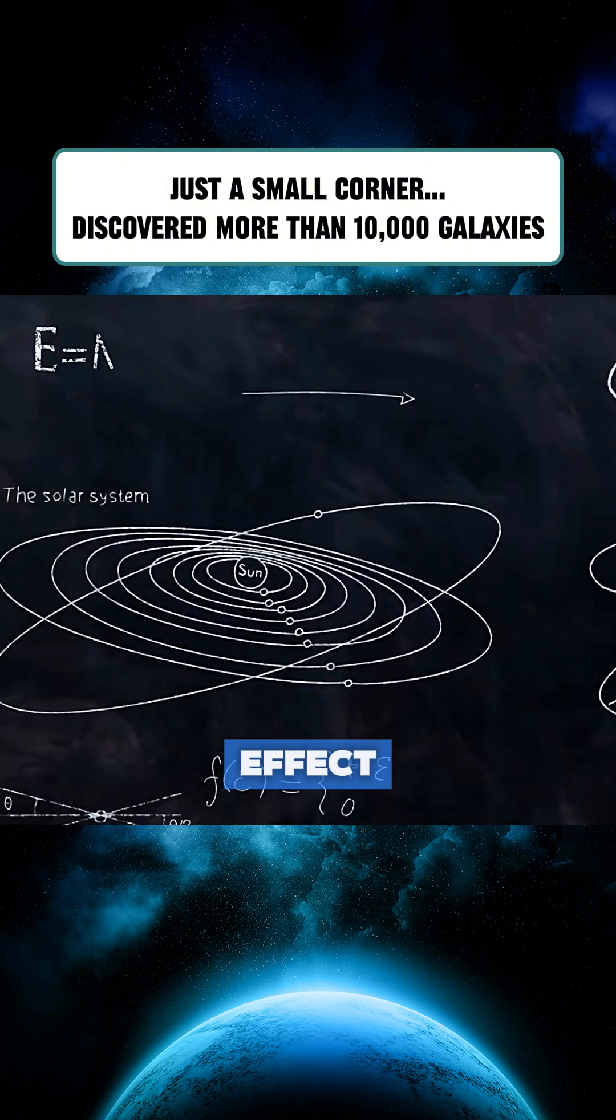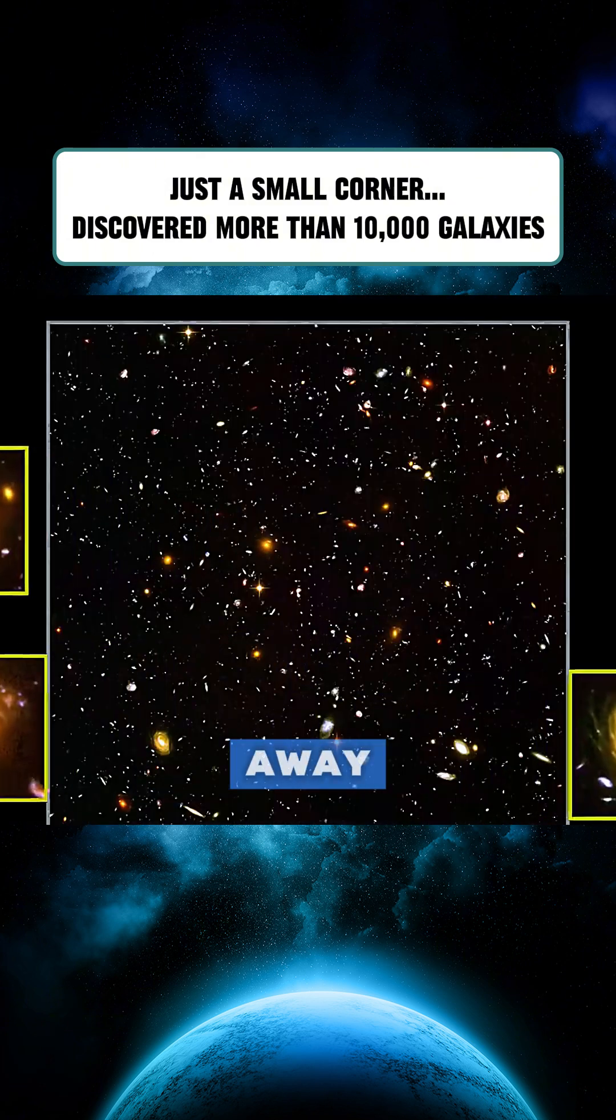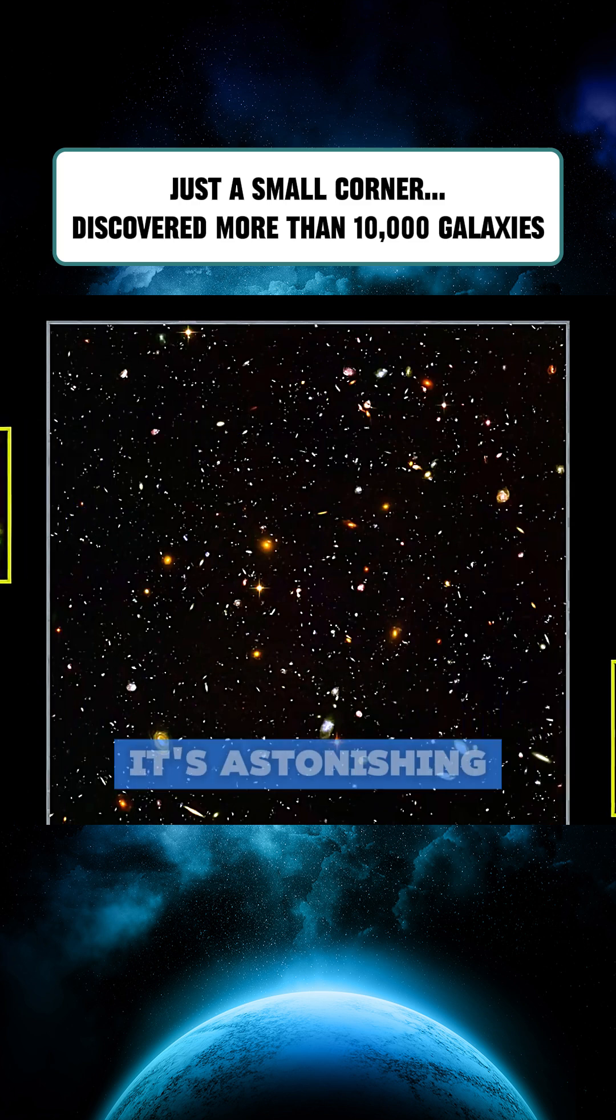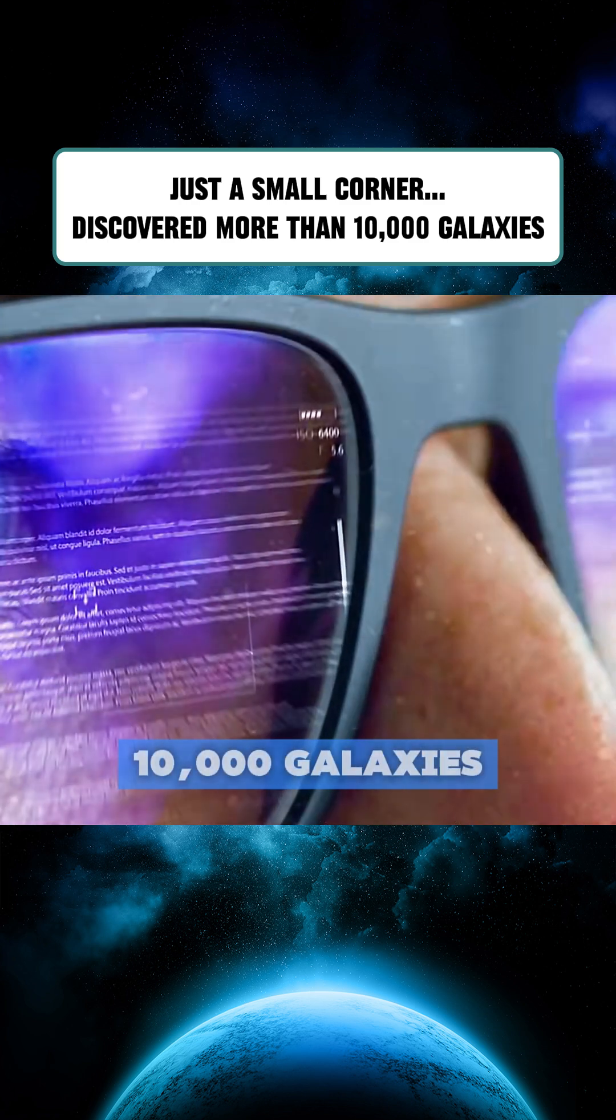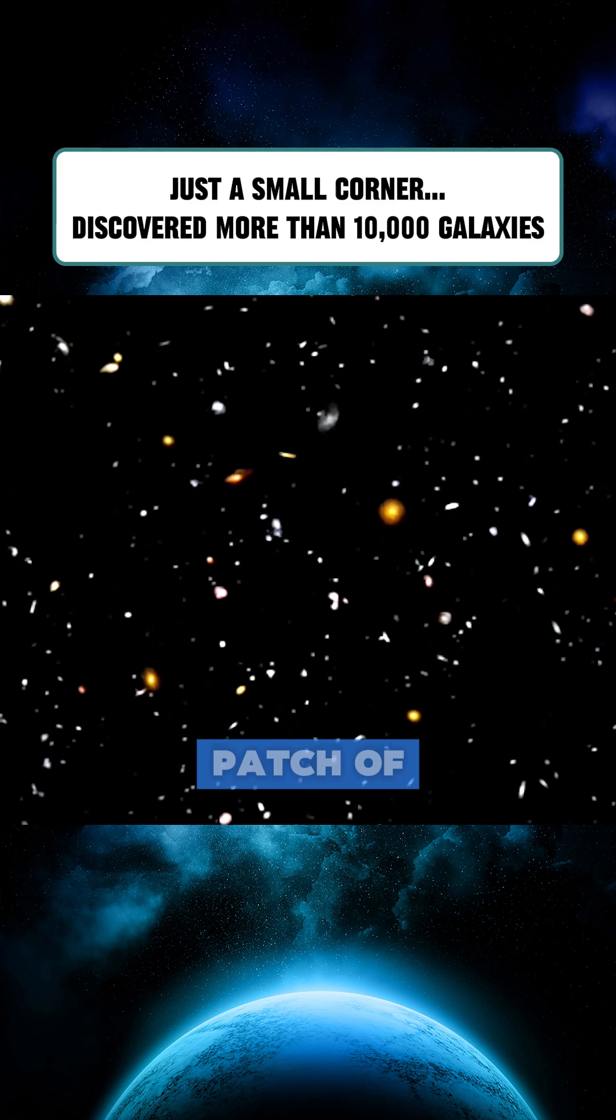According to the Doppler effect, galaxies that appear red are farther away, while blue ones are closer. It's astonishing to realize that over 10,000 galaxies can exist within such a small patch of space.